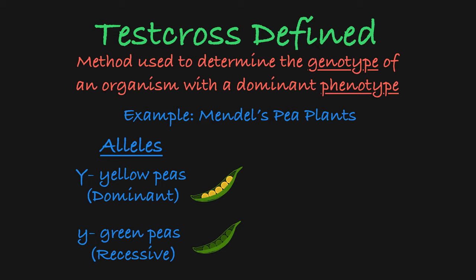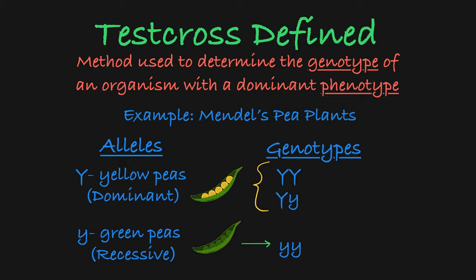As such, a plant producing pods with yellow peas can either have the homozygous dominant genotype or the heterozygous genotype, while a plant producing pods with green peas must have the homozygous recessive genotype.